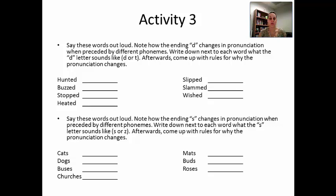In the first group of words — 'hunted,' 'buzzed,' 'stopped,' 'heated,' 'slipped,' 'slammed,' 'wished' — note how the ending 'D' changes in pronunciation when it's preceded by different phonemes. Write down next to each word what the 'D' letter sounds like — it can sound like either 'D' or 'T.' Notice that those are voiced and voiceless pairs.